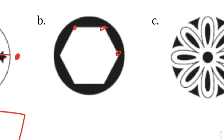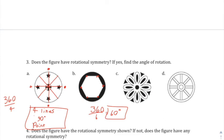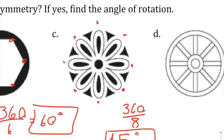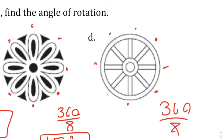A hexagon inside a circle: 360 divided by six key points gives 60 degrees rotational symmetry. Another figure with eight vertical points: 360 divided by 8 is 45 degrees rotational symmetry. The last similar figure also has eight critical points, so again 360 divided by 8 equals 45 degrees.